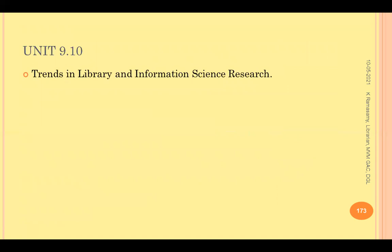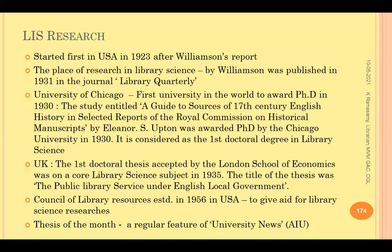That concludes Unit 9.9. Moving to Unit 9.10, we discuss the latest trends in library and information science research. Research in library science started long back in the 1920s when William Sum published a paper in Library Quarterly. The first PhD in library science in the world was awarded in 1930 by the University of Chicago to Eleanor S. Putin, for a study titled 'A Guide to Sources of 17th Century English History in Selected Reports of the Royal Commission on Historical Manuscripts.'